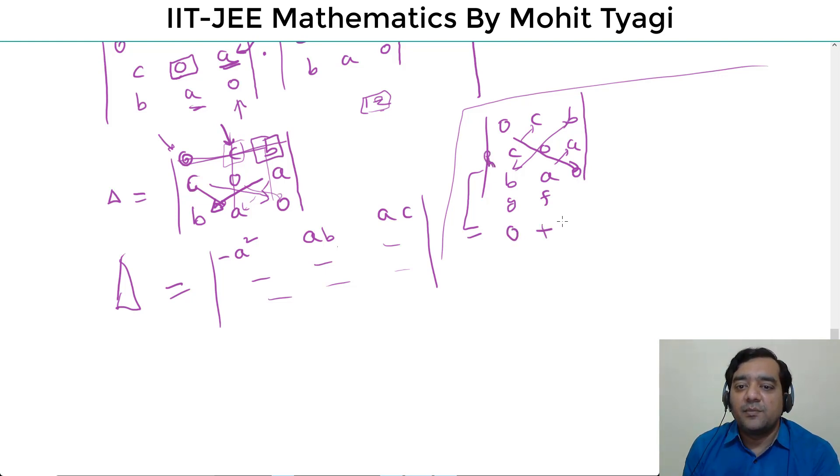This is the value. This is the case of a, b, c, with three on zero. So a square, b square, c square, 0. This value is 2abc.